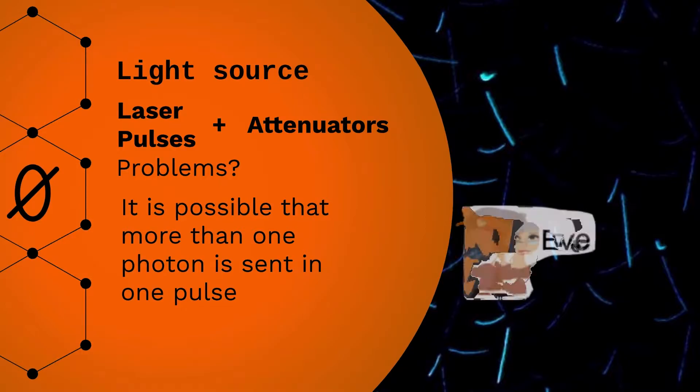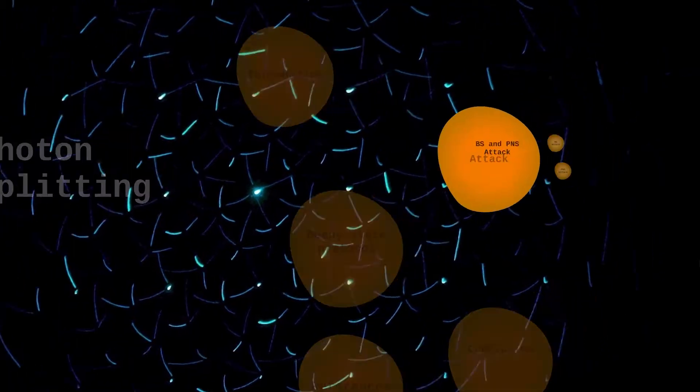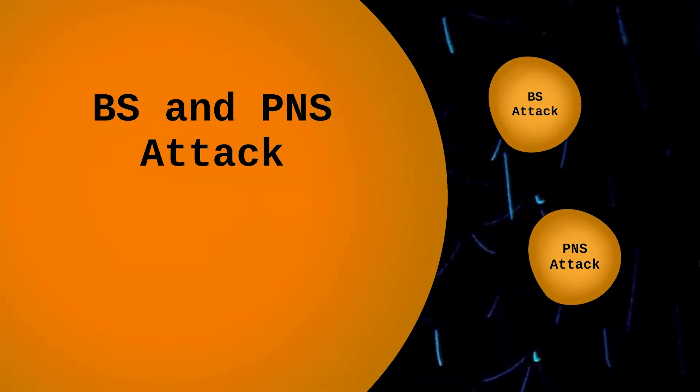Then this gives Eve a chance to eavesdrop the messages. Eve can perform two kinds of attacks: beam splitter attack and photon number splitting attack.